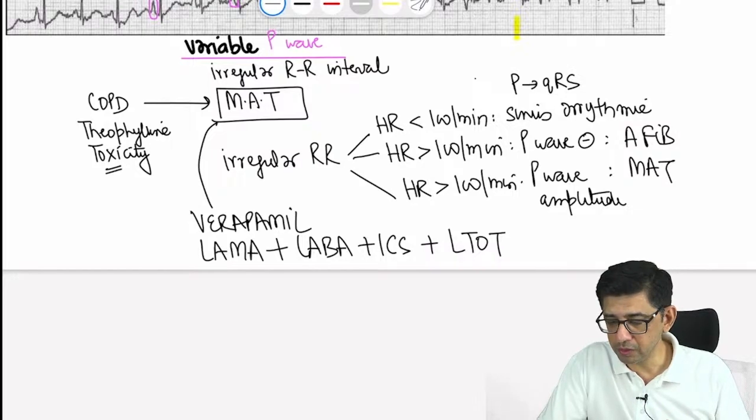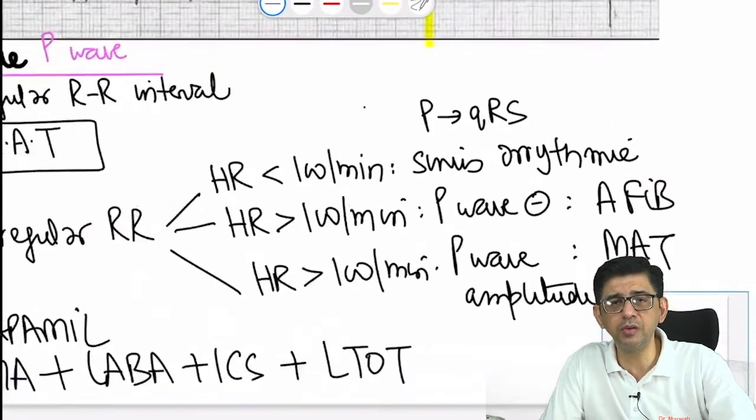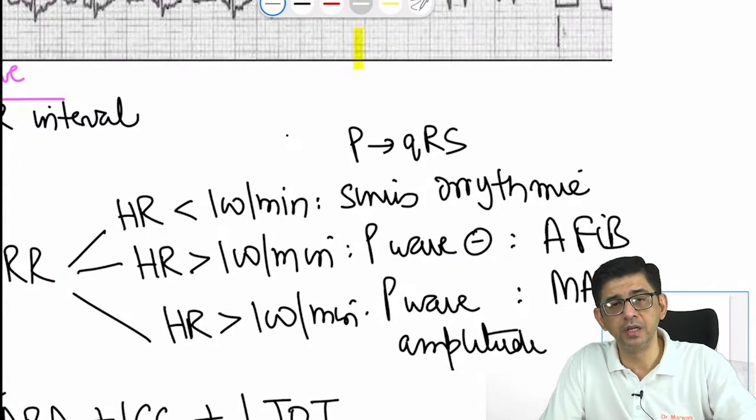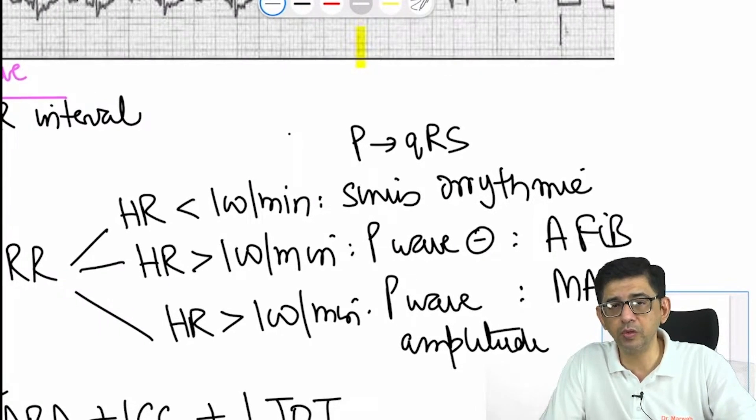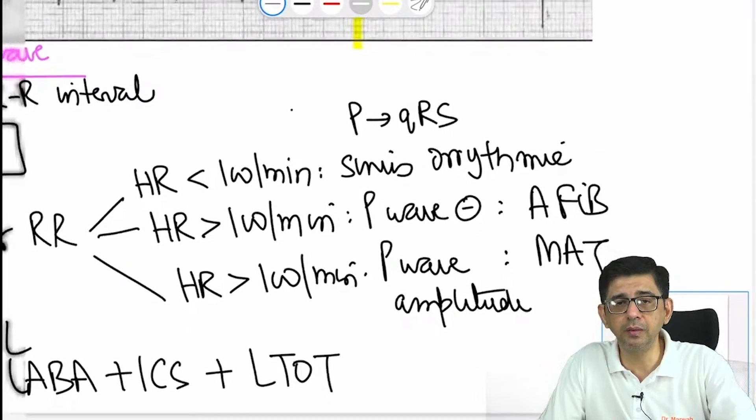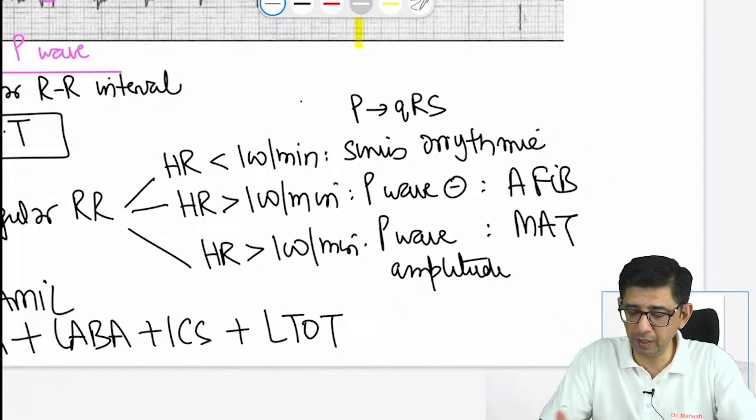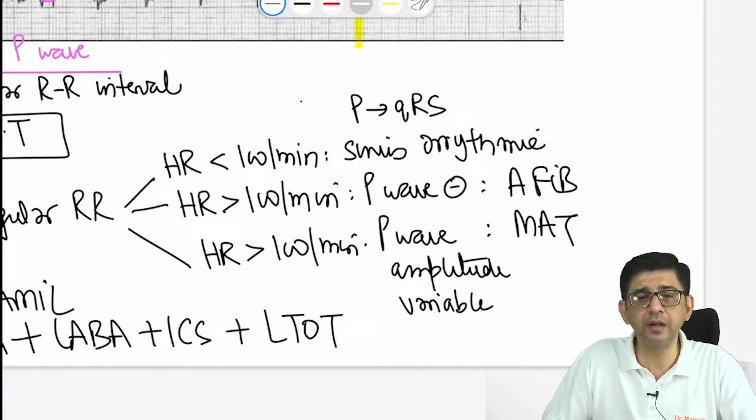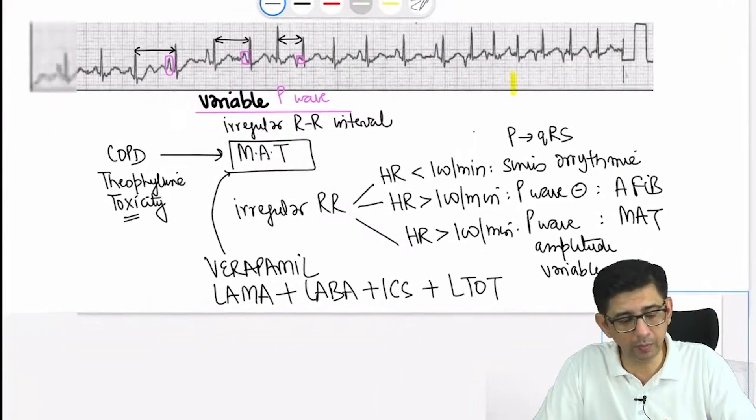How to approach: check out the heart rate. If it's less than 100, sinus arrhythmia. If more than 100 and absent P wave, A-fib. If P wave amplitude is variable, then it's multifocal atrial tachycardia. If it's bradycardia, then it's heart block.